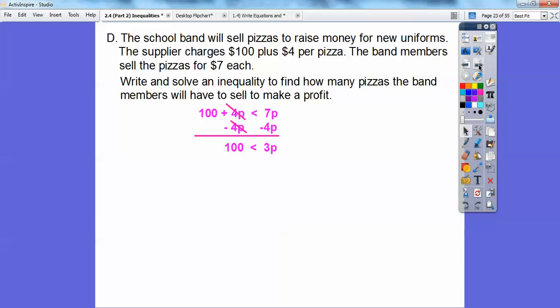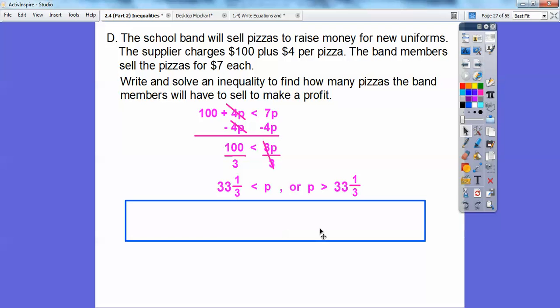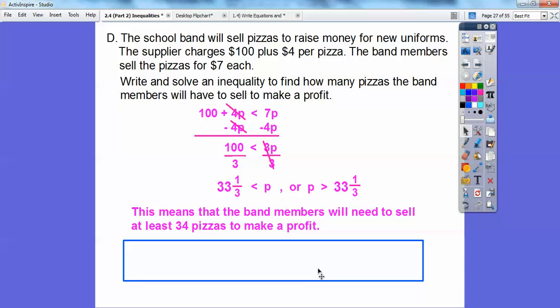We're going to subtract 4P, and 7P minus 4P is 3P. When we divide, 3 goes into 100, 33 and a third times. I like to have the inequality on the left-hand side. This tells me the number of pizzas has to be greater than or equal to 33 and a third pizzas. Since we're talking about pizzas, we're going to round up to the next pizza, which is 34 pizzas. This means the band members will need to sell at least 34 pizzas to make a profit, because otherwise they're going to be losing money.